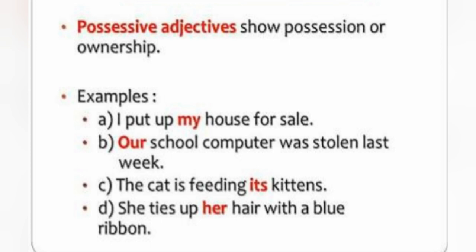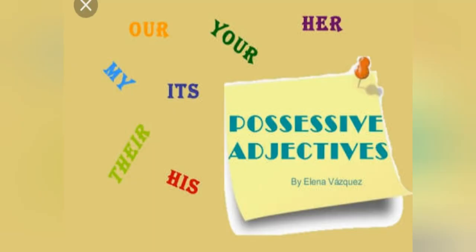Possessive adjective noun se pahle aate hain. Aur possessive pronouns are used in place of the noun they represent — jis noun ko represent kar rahe hain, us ki jagah par aate hain. Kyunki pronouns kya hote hain? Jo nouns ki jagah le lete hain.